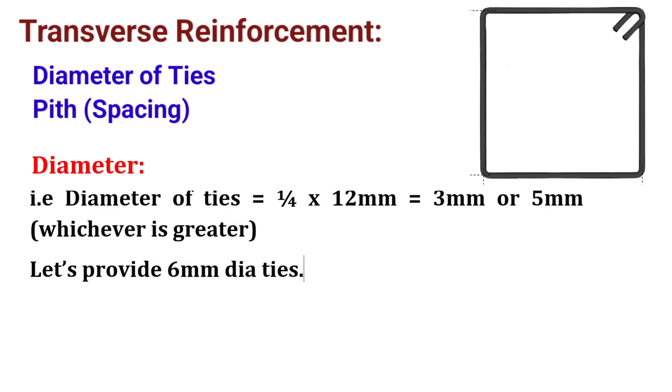The diameter of the lateral ties shall not be less than one fourth of the diameter of the largest longitudinal bar and in no case less than 5 mm.